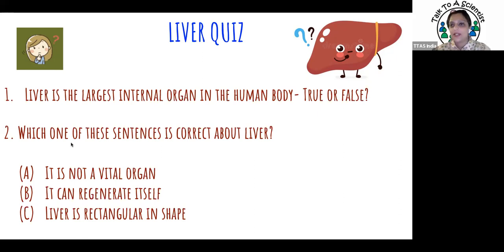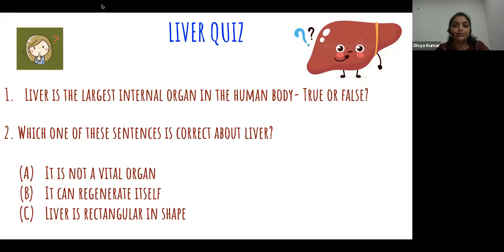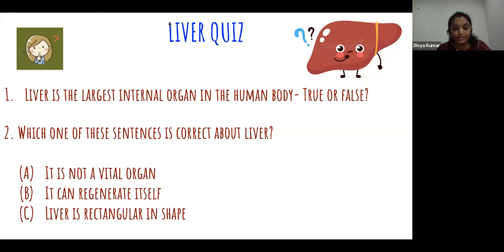A question: does only the liver do this - making proteins, breaking toxins? No, there are other organs that do making and breaking too. But the liver is the organ where all of the metabolism takes place - carbohydrate, protein, and fat metabolism are all involved. Muscles make and break proteins, but the liver handles all three types of metabolism simultaneously.